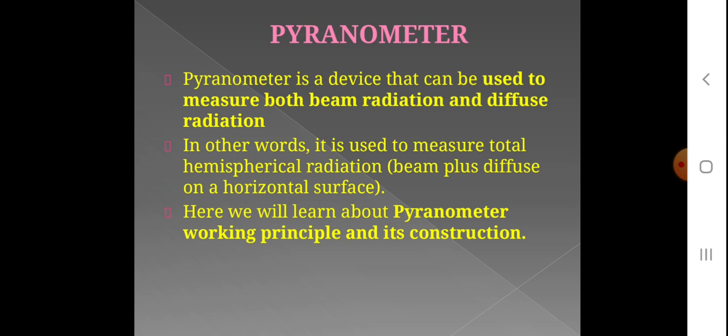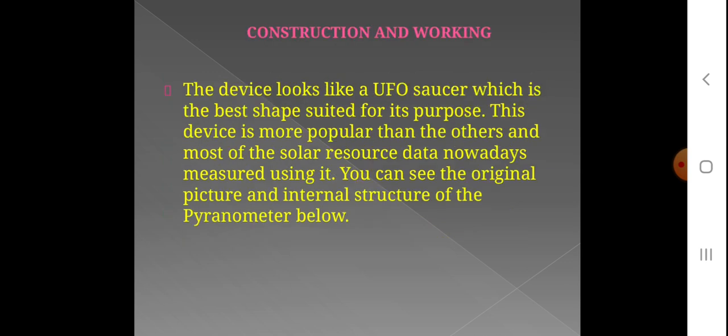In this video, we will show the construction and working principle of the pyranometer. The shape of this device looks like a saucer — similar to a UFO or flying saucer shape. This is the best shape suited for its purpose of measuring solar radiation. This device is more popular than others, and most solar resource data nowadays is measured using it. You can see the original picture and internal structure of the pyranometer.